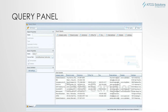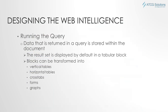This is the query panel. We can see the result objects and the data sample. When designing the Web Intelligence report and running the query, the data returned is stored within the document. The result set is displayed by default in a tabular block, and the block can be transformed into vertical tables, horizontal tables, cross tabs, forms, and graphs.